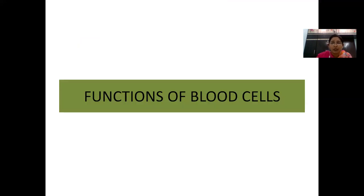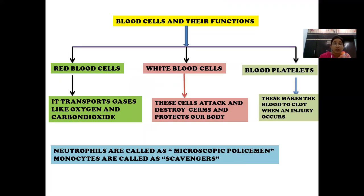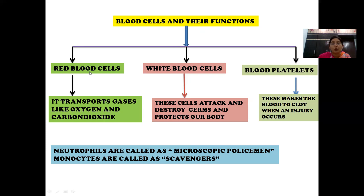Now I'll explain what are the functions of blood cells. Red blood cells contain hemoglobin. The role of hemoglobin is to bind oxygen and carry it to all parts of our body, and it can also bind carbon dioxide. So the major function of red blood cells is to transport gases like oxygen and carbon dioxide.